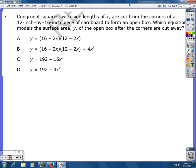Congruent squares with side lengths of X are cut from the corners of a 12 inch by 16 inch piece of cardboard to form an open box.